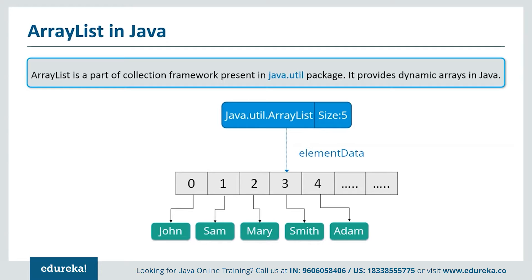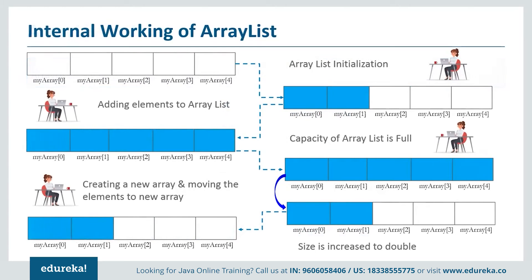ArrayList allows us to randomly access the list, and ArrayList cannot be used for primitive types like int, char, etc. We need a wrapper class for such cases. Now let's see the internal working of ArrayList. First we create an empty array and then go on adding elements. Once the size of the array is full — that is, if the size of the current elements is greater than the maximum size — then we have to increase the size. Since the array size cannot be increased dynamically, what happens internally is a new array is created and the old array is copied to the new array, effectively doubling the size.